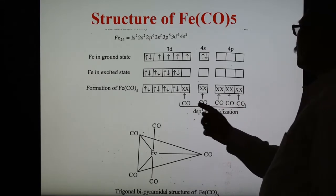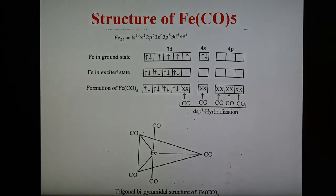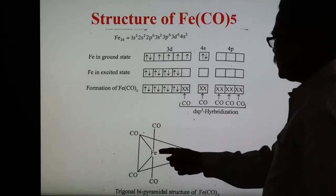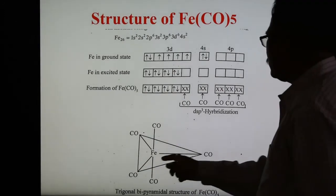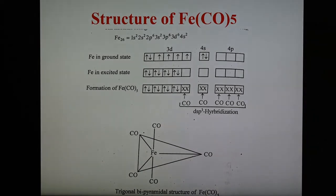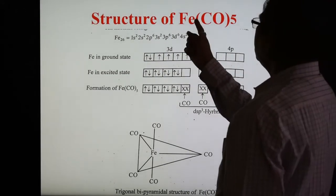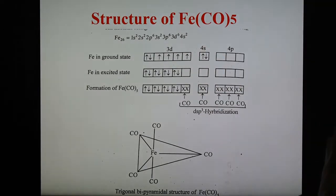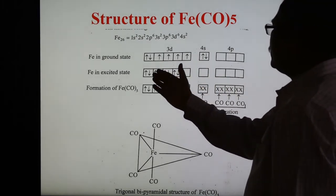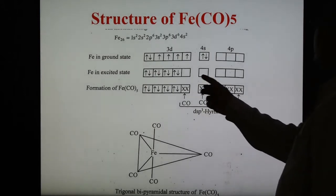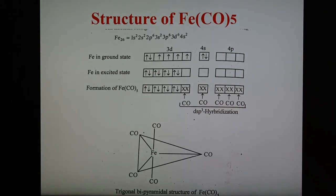These 5 vacant orbitals accept electron pairs from the 5 carbonyl groups, forming 5 coordinate bonds. Because of dsp3 hybridization, the shape of iron pentacarbonyl is trigonal bipyramidal. In trigonal bipyramidal geometry, 3 orbitals form a triangular planar ring and 2 are perpendicular to the ring, one above and one below the plane. This is the trigonal bipyramidal structure of iron pentacarbonyl.